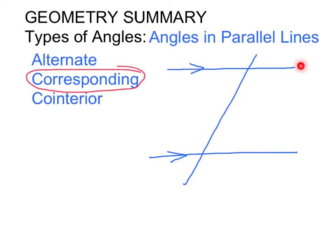Corresponding angles make an F shape. Corresponding angles are also equal.